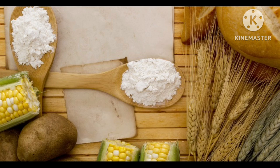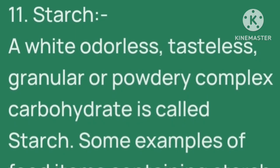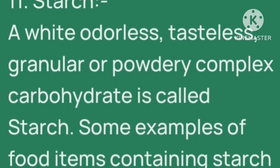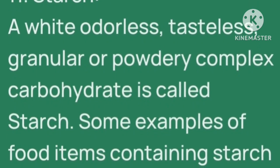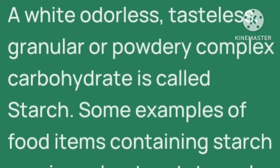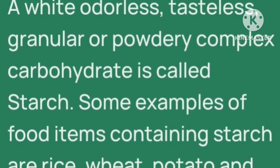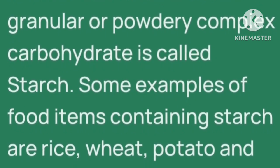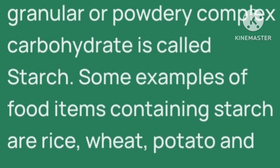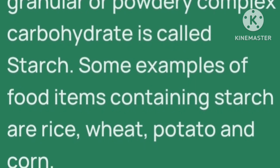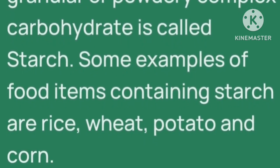11th number: starch. A white, odorless, tasteless, granular and powdery complex carbohydrate is called starch. Odorless means इसमें गंध नहीं होती, tasteless कोई टेस्ट नहीं होता, और ये grain के form में भी होती है और powdery form में. Carbohydrate two types का होता है: simple carbohydrate और complex carbohydrate. Starch complex carbohydrate में आता है. Some examples containing starch are rice, wheat, potato and corn.